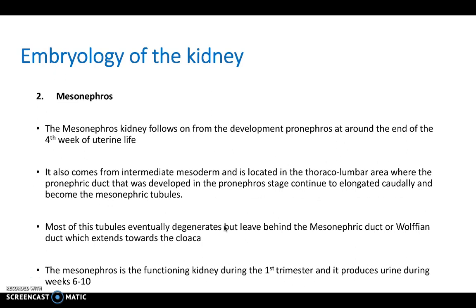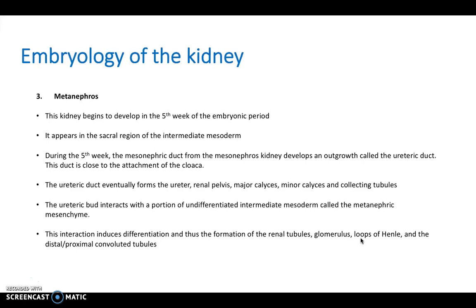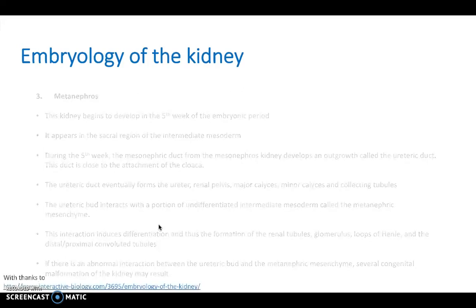The second stage is mesonephros, occurring from the end of week four until around week ten. It is a functioning kidney during the first trimester, producing urine from weeks six to ten. Most tubules eventually degenerate but leave behind mesonephric ducts or Wolffian ducts, which extend toward the cloaca. The third stage is metanephros, beginning around the fifth week: the mesonephric ducts develop an outgrowth called the ureteric bud, which eventually forms the ureter, renal pelvis, major calyces, minor calyces, and collecting tubules. The main kidney development occurs here, all within the first ten weeks.